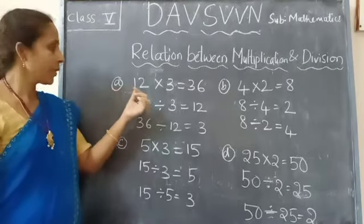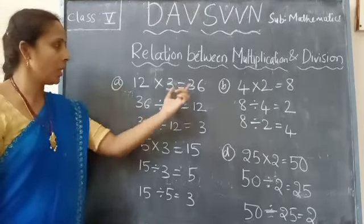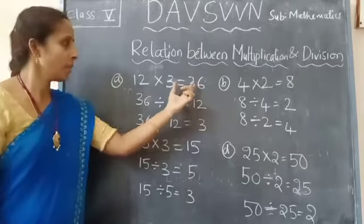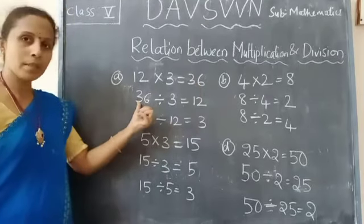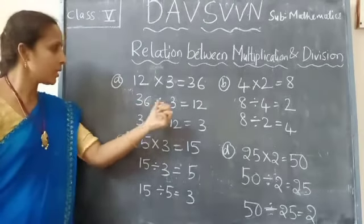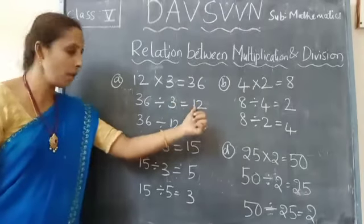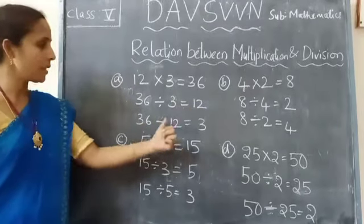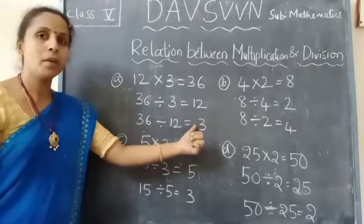Example 1: 12 multiplied with 3 gives 36. Using division, this can be written as 36 divided by 3 is equal to 12, and 36 divided by 12 is equal to 3.